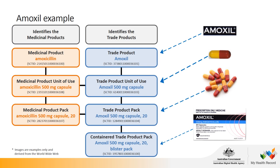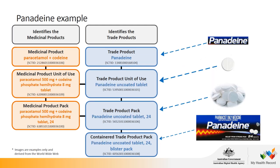Looking at some specific examples, we have AMOXXL here, showing each of the different concepts associated with the representation of this product. The trade product shows the brand name AMOXXL; the trade product unit of use shows it is an AMOXXL 500 milligram capsule; the trade product pack shows it has a pack size of 20 capsules; and the container trade product pack shows it comes in a blister pack. For Panadine, similarly we see the trade product name, the unit of use of Panadine Uncoated Tablet, then the pack of 24, contained in a blister pack — and the trade concepts link to medicinal concepts showing it contains paracetamol and codeine.